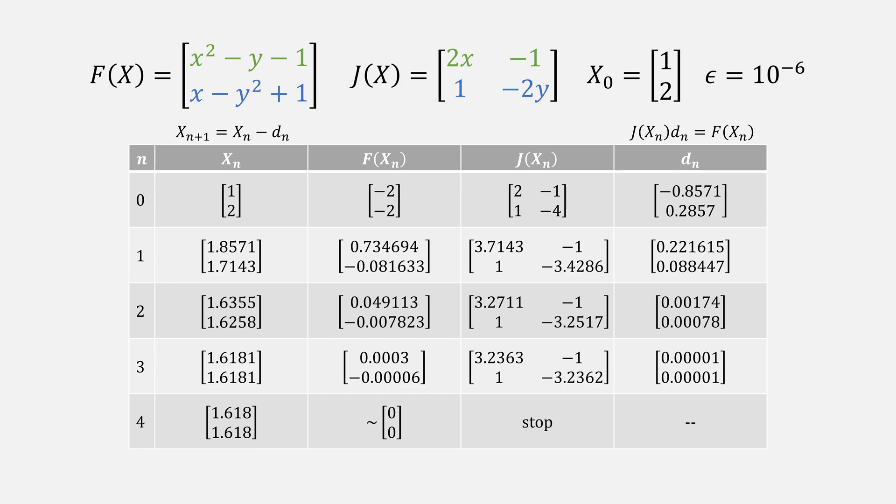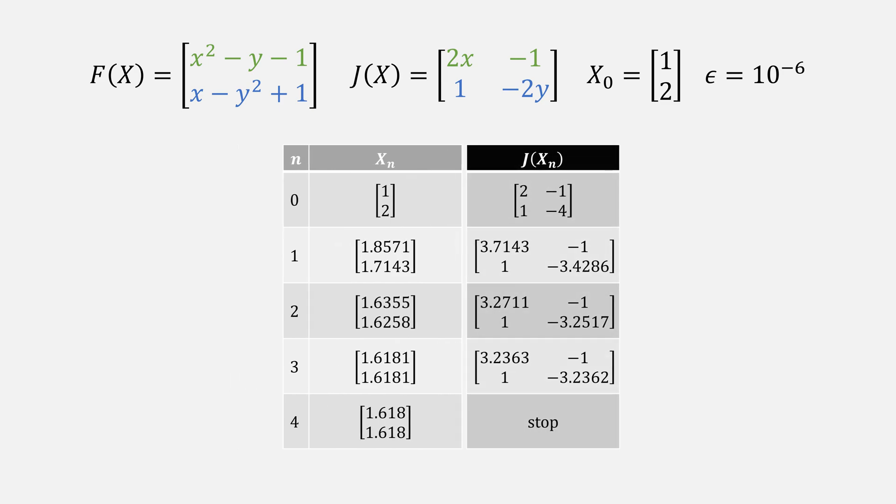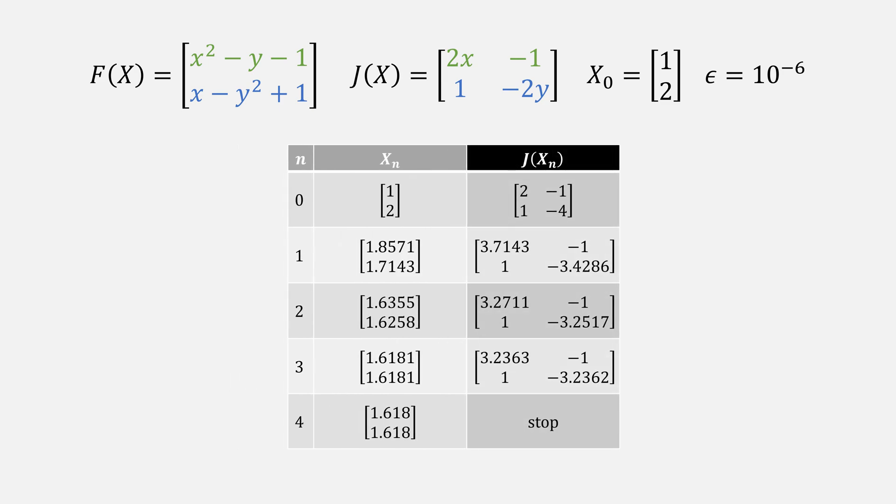Let's pay attention just to two columns. Here we have our sequence of steps, x, as well as the Jacobian at those points. Let's fill in that last one. One interesting behavior is that the Jacobian doesn't change a whole lot after the first few steps.